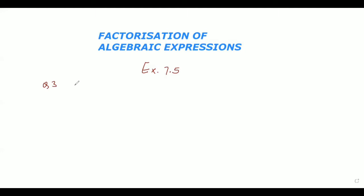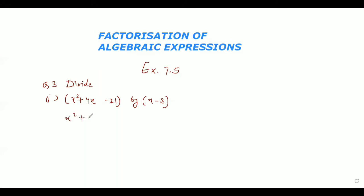Let's see how to solve question number three of Exercise 7.5. In question number three, Exercise 7.5, we have to do the division of algebraic expressions. The first part is x squared plus 4x minus 21 divided by x minus 3. We would write x squared plus 4x minus 21 divided by x minus 3, and in our next step we would split the middle term: x squared plus 7x minus 3x minus 21, divided by x minus 3.